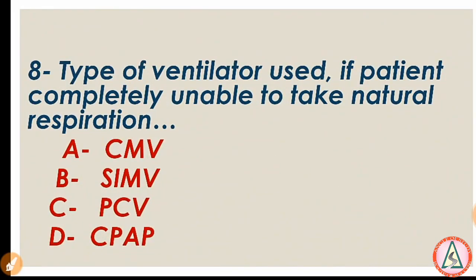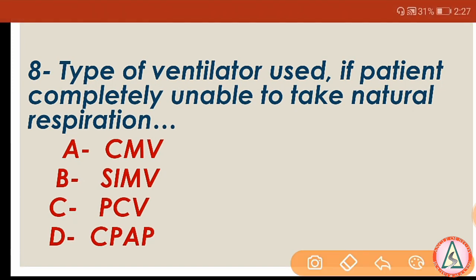Question number 8: What type of ventilator is used if a patient is completely unable to take natural respiration? A) CMV, B) SIMV, C) PCV, D) CPAP. The right answer is CMV — Controlled Mandatory Ventilation. CMV is used when a patient is completely unable to take natural respiration.